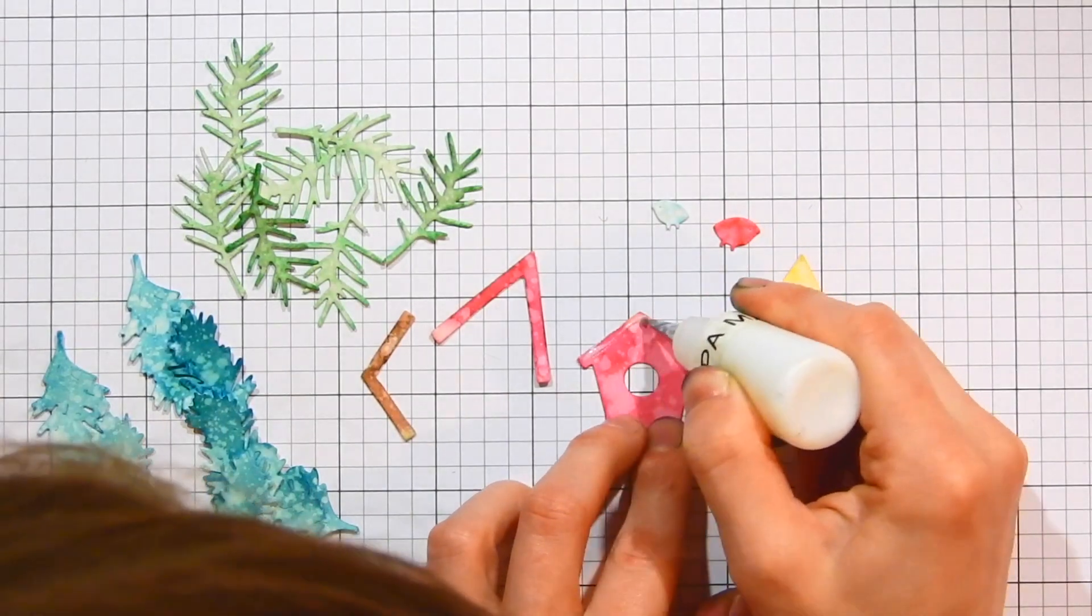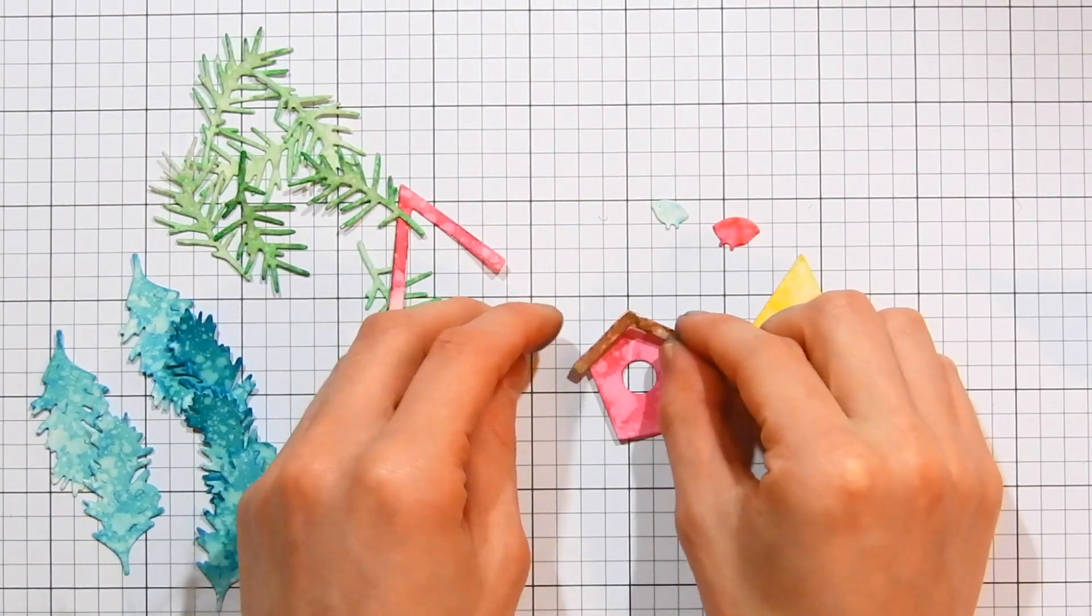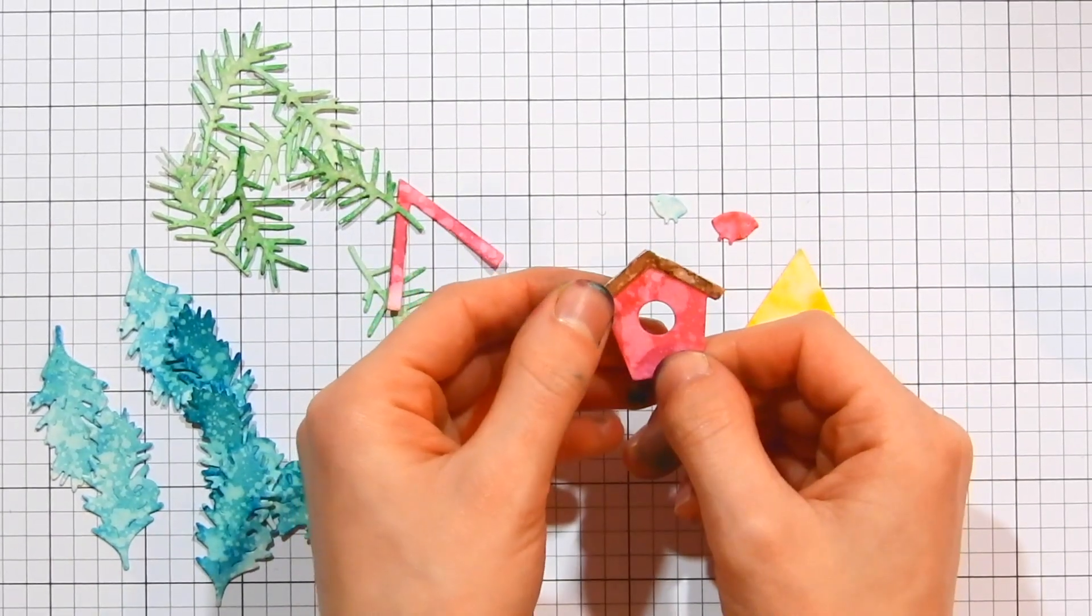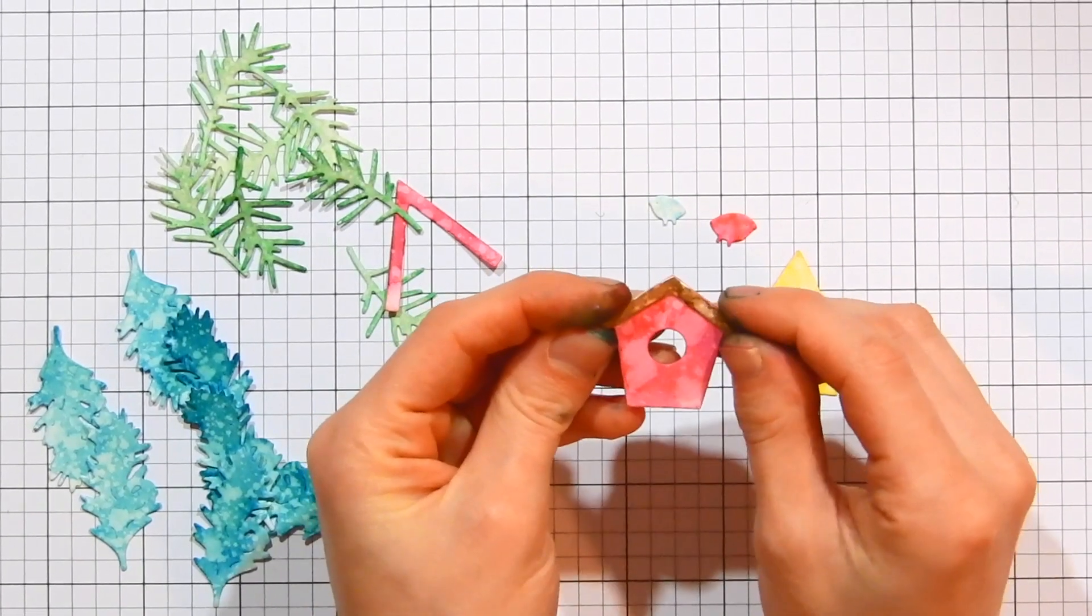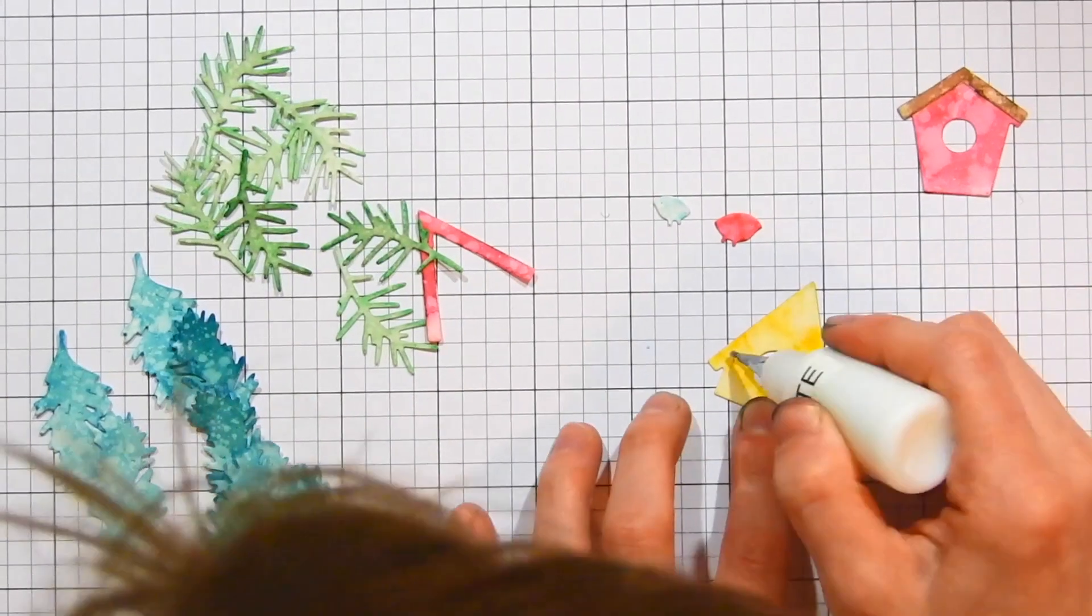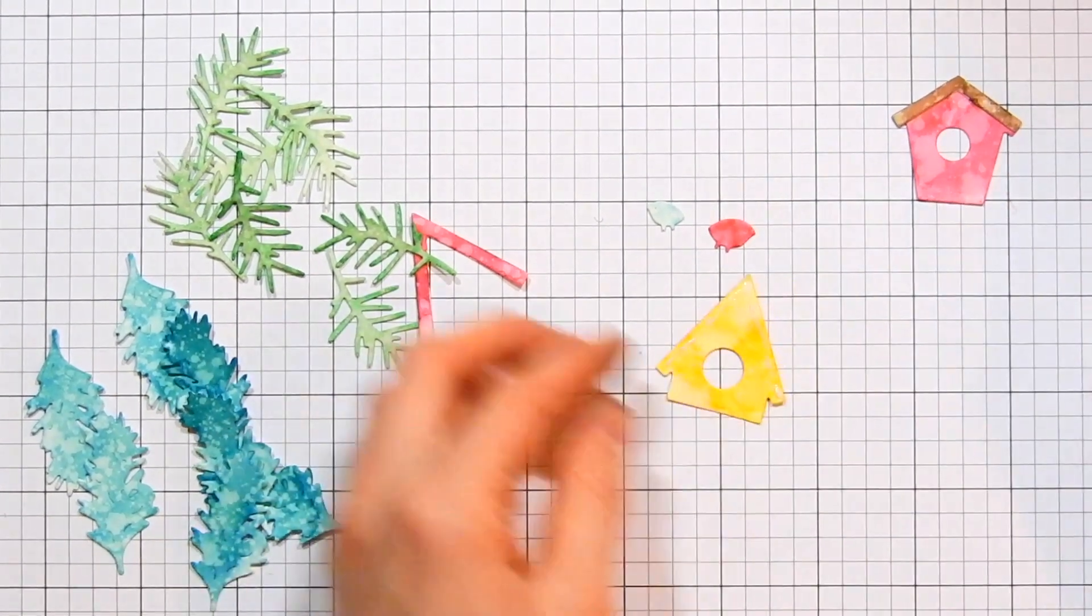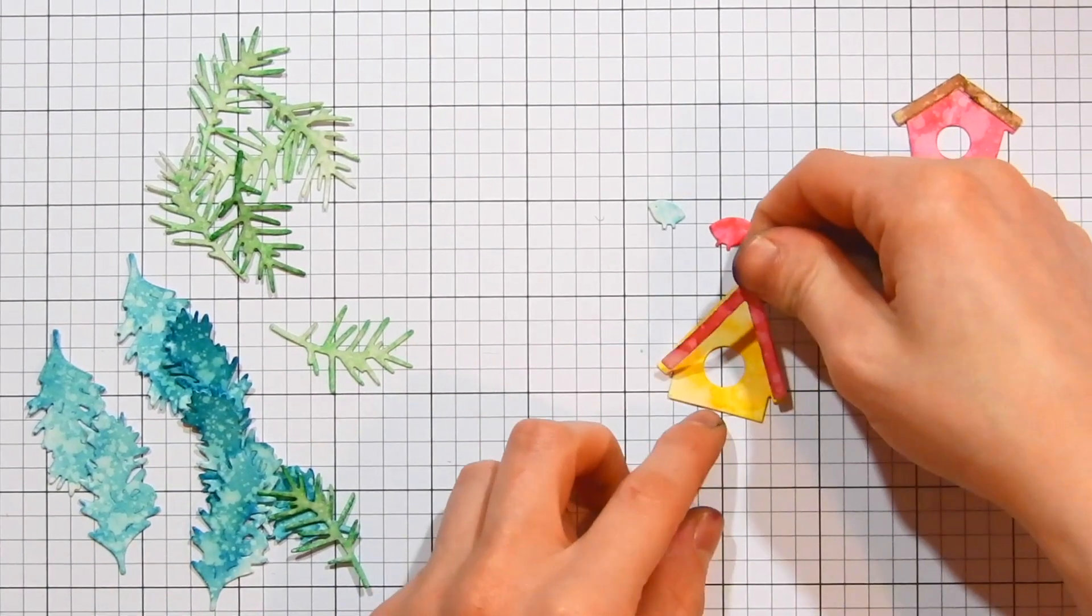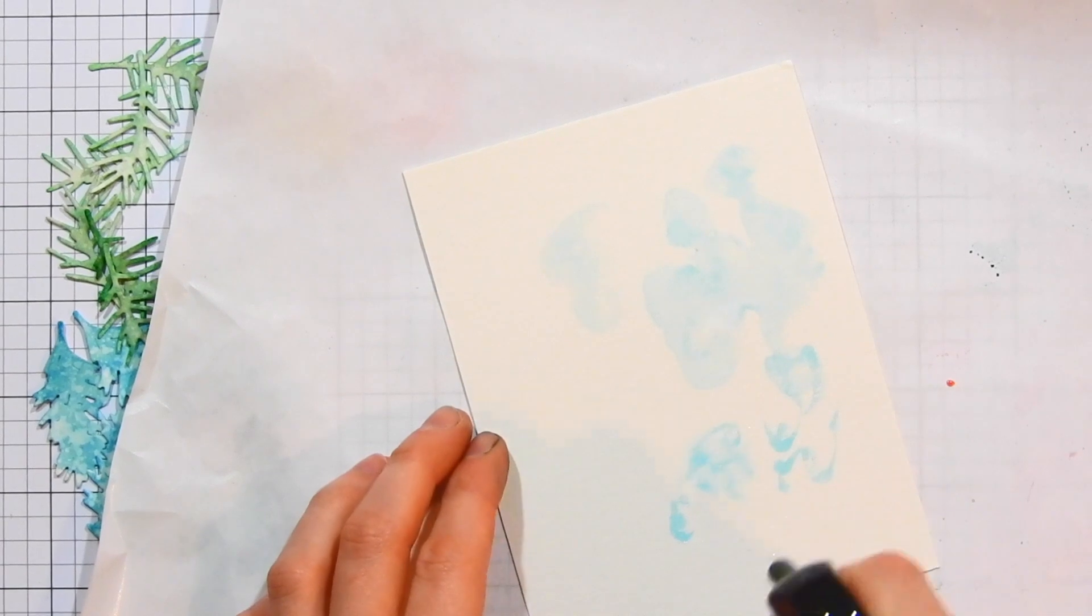There's no longer the white core of the cardstock showing through. To build the birdhouses, I'm just taking some liquid glue and adhering the little rooftops on top of each of the two birdhouses. The glue I'm using is PPA matte adhesive. I find this adhesive is my favorite to use out of all the different adhesives that I have in my craft room. Now it's time to create a background.